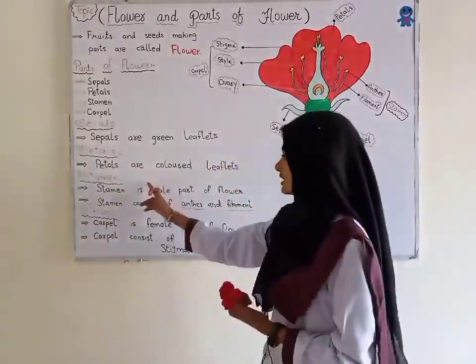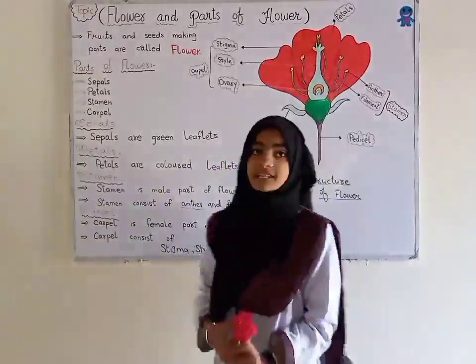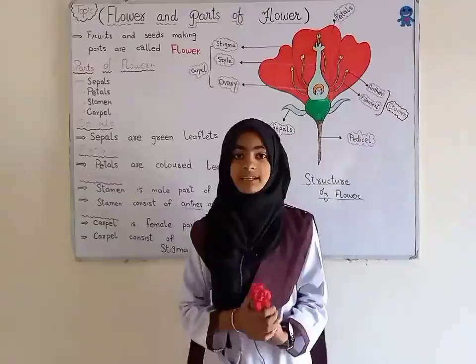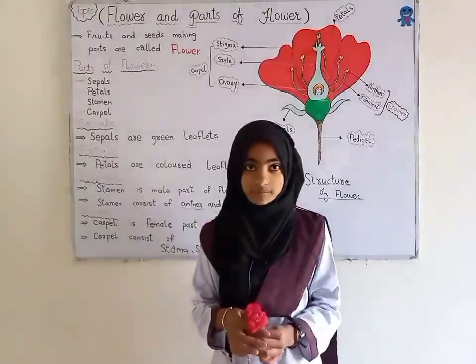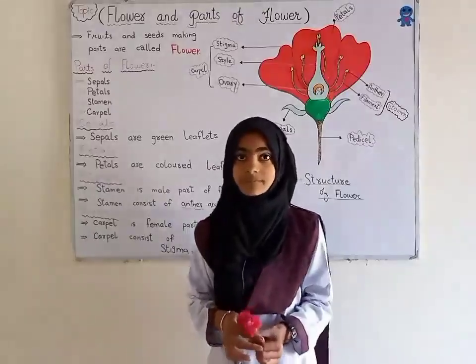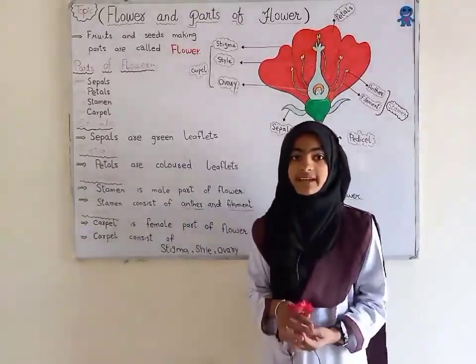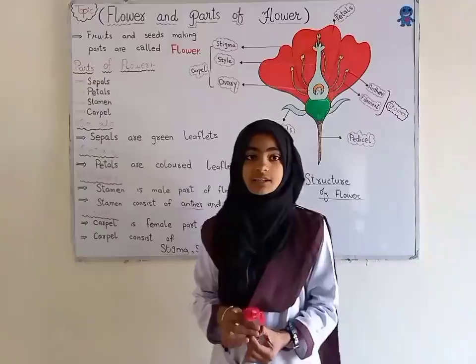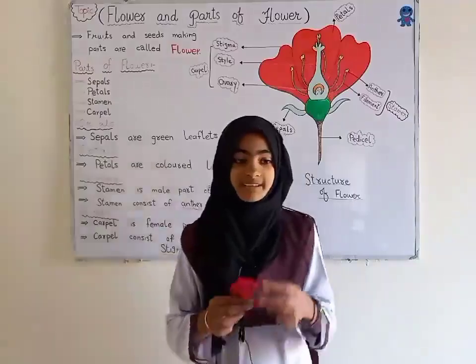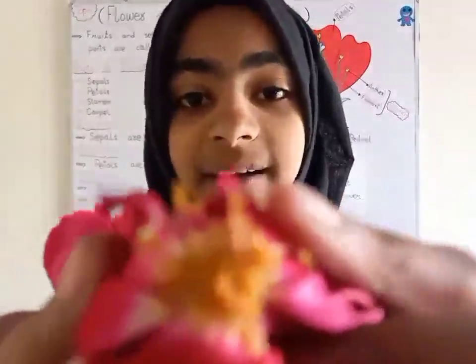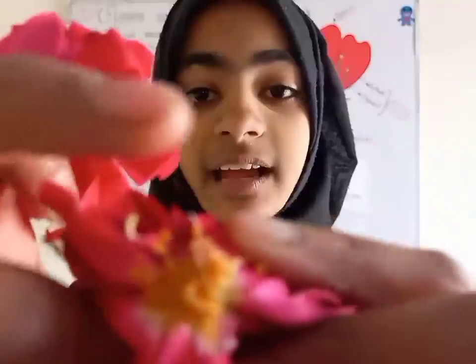Next is stamen. Stamen is the male reproductive part of the flower. Stamen consists of a stalk, filament, and anther. These are anther and filament.